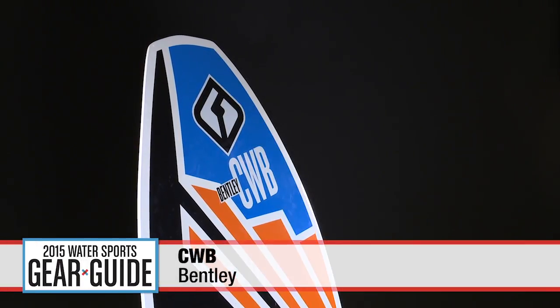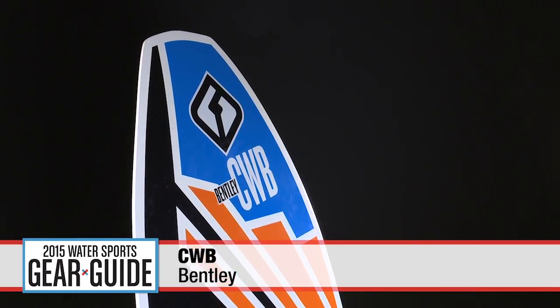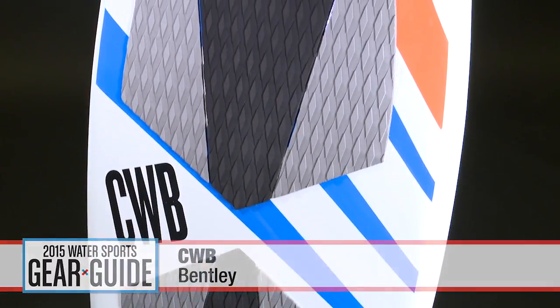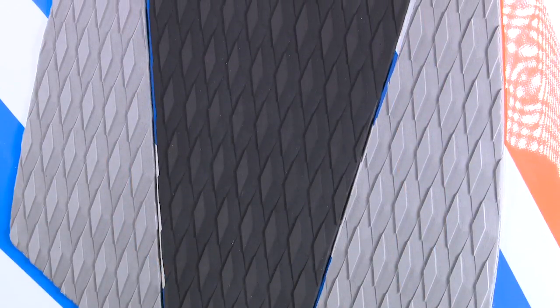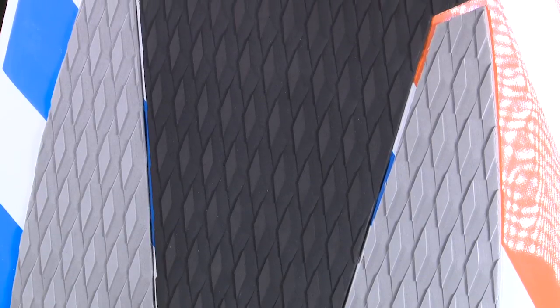The thin profile of the CWB Bentley has a very skate-like feel that actually grips into the wave while riding. It comes in one size, 4'8", and is offered in a fresh shape for the CWB's wakesurf line.